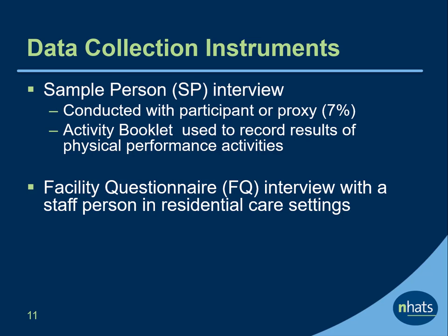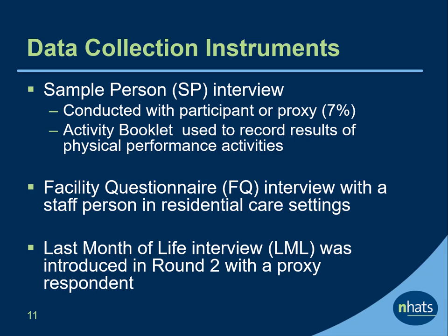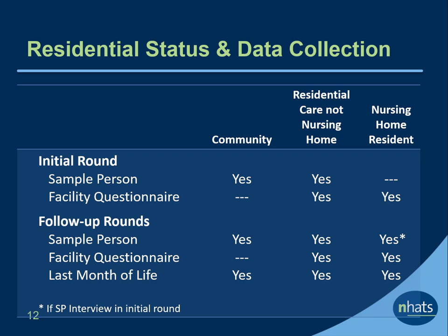The FQ collects information on type of facility and levels of care available, the service package where the SP lives, and sources of payment for SP's care. When a sample person is deceased, the last month of life, or the LML interview, is administered to a proxy respondent, typically a close family member. Data collection is designed to be as consistent as possible across different settings and across rounds. Sample persons living in community settings are administered the sample person interview in the initial round and in follow-up rounds. For sample persons who die between rounds, a last month of life interview is conducted with a proxy respondent, usually a family member. Sample persons living in residential care settings other than nursing homes are administered the sample person interview in initial and follow-up rounds and are also eligible for the last month of life interview. In addition, a facilities questionnaire interview is conducted at each round.